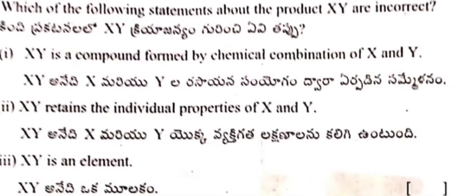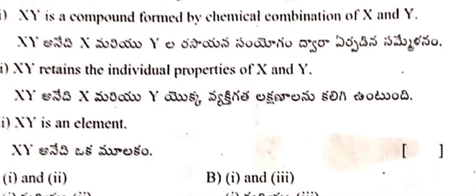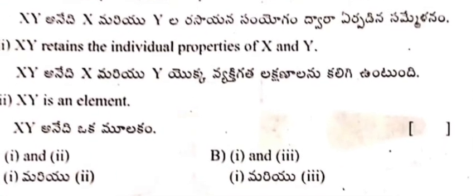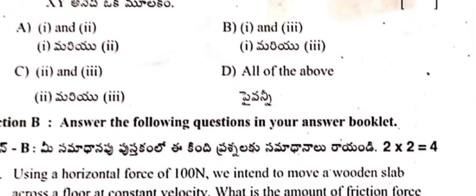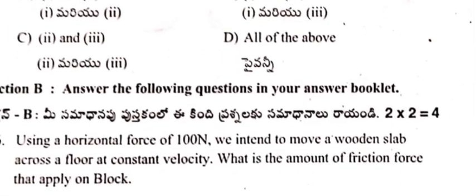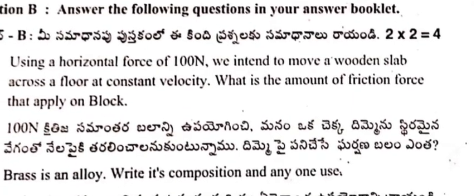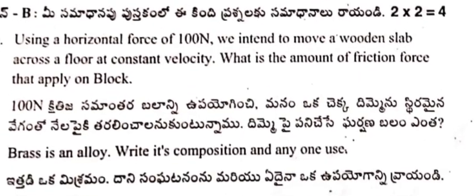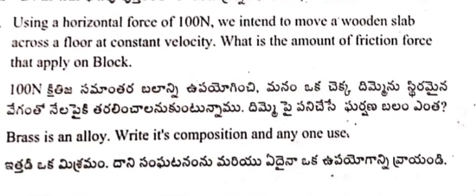Question 15: Substances X and Y react to form substance XY. Statements given: 1) XY is a compound formed by chemical combination of X and Y, 2) XY retains the individual properties of X and Y, 3) XY is an element. Options A, B, C, D are given.